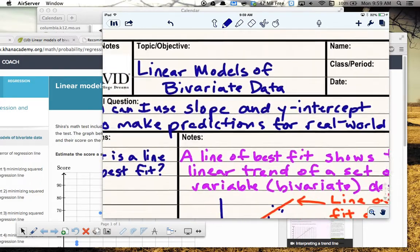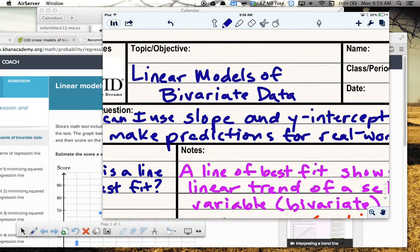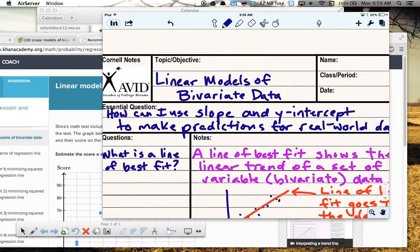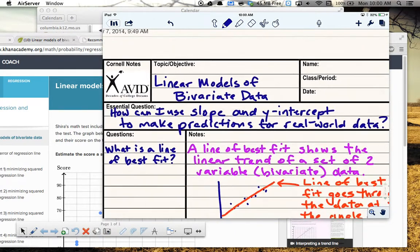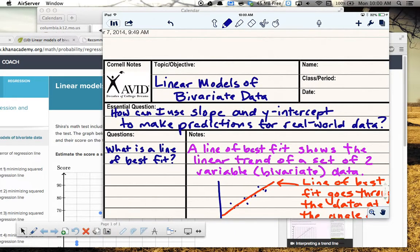Linear models of bivariate data is the topic that we're talking about. And then the major idea here, the essential question is how can I use slope and y-intercept to make predictions for real-world data?